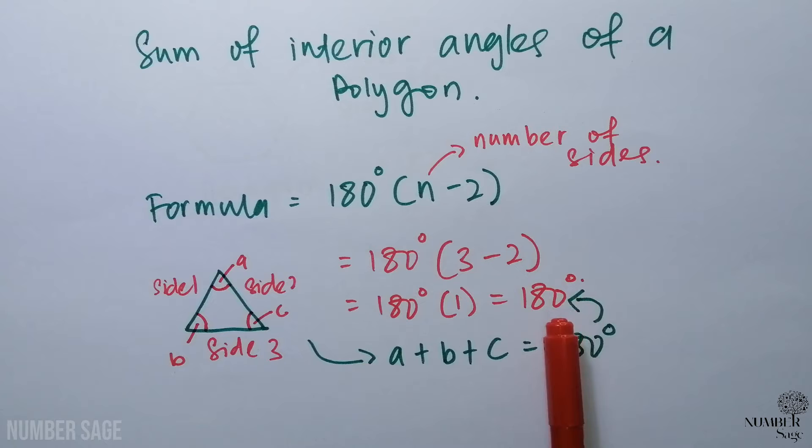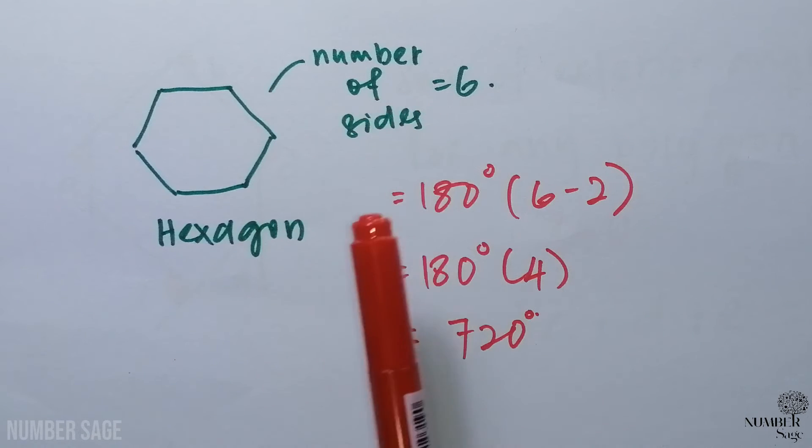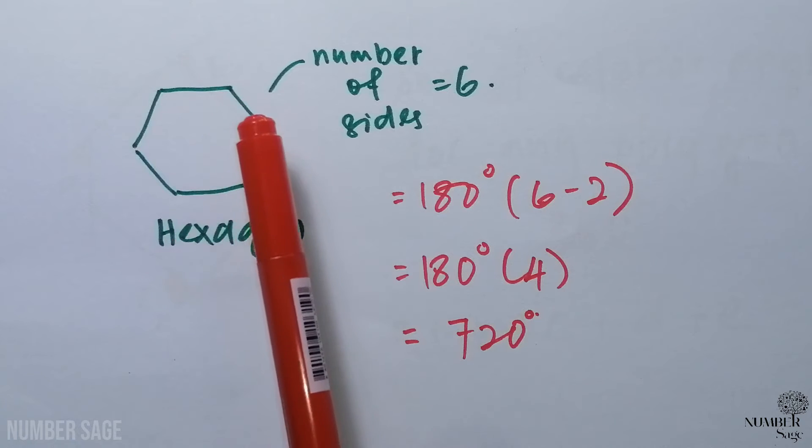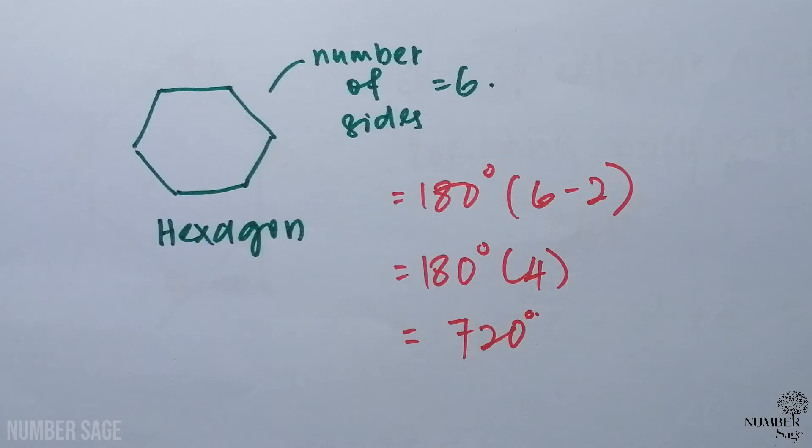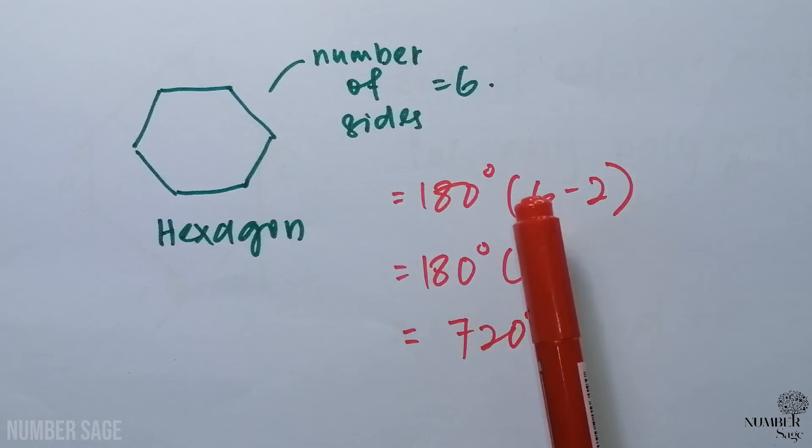Now let's look at another example. This is a hexagon. It has six sides: 1, 2, 3, 4, 5, and 6. To find the interior angle, the formula is still the same: 180 degrees times n minus 2. N indicates the number of sides. In this case it's 6, so 6 minus 2 will give us 4. 180 times 4 will give us 720 degrees.